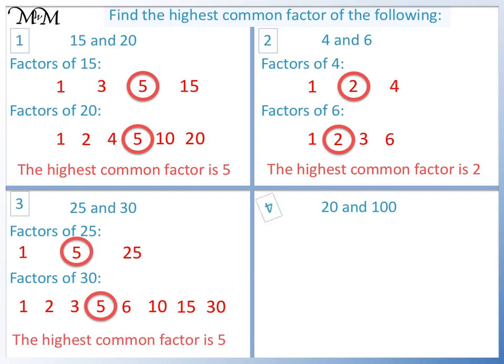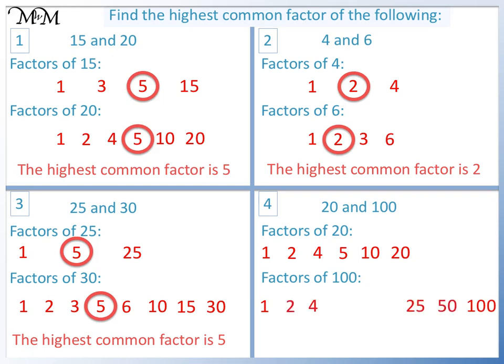Question 4: The factors of 20 are 1 times 20, 2 times 10, and 4 times 5. The factors of 100 are 1 and 100, 2 and 50, 4 and 25, 5 and 20, and 10. The highest common factor is 20.